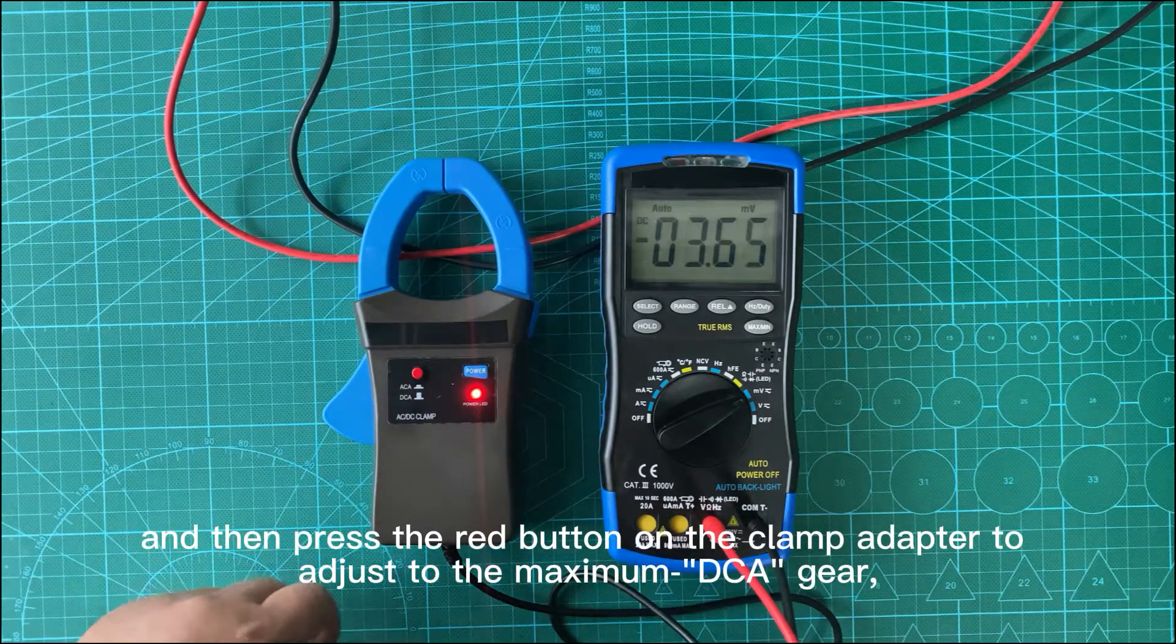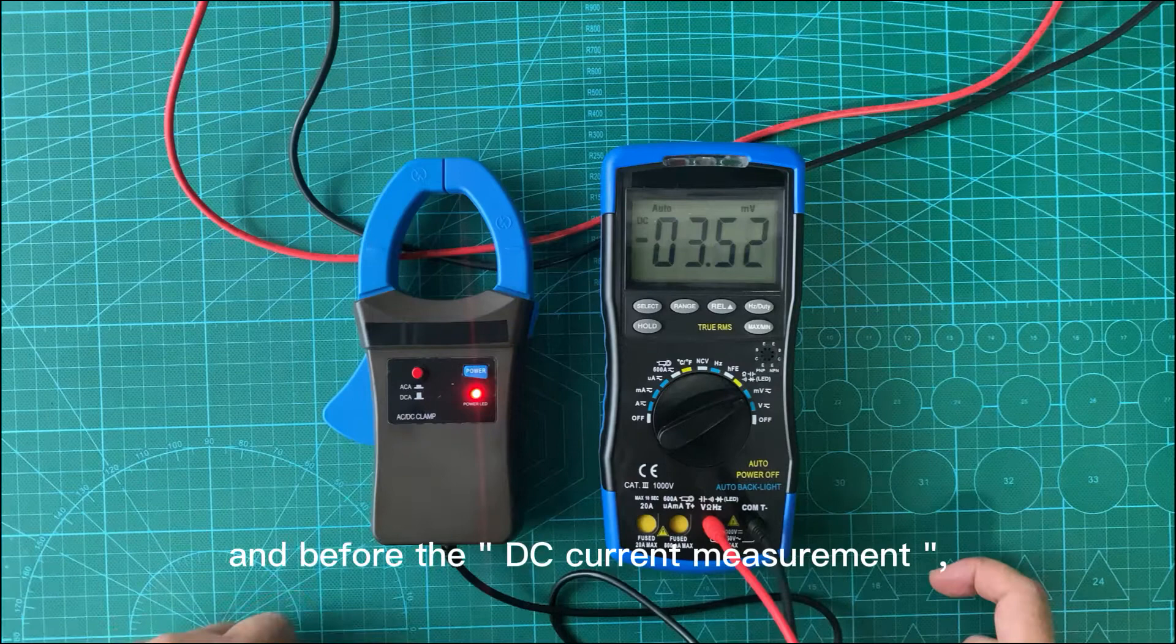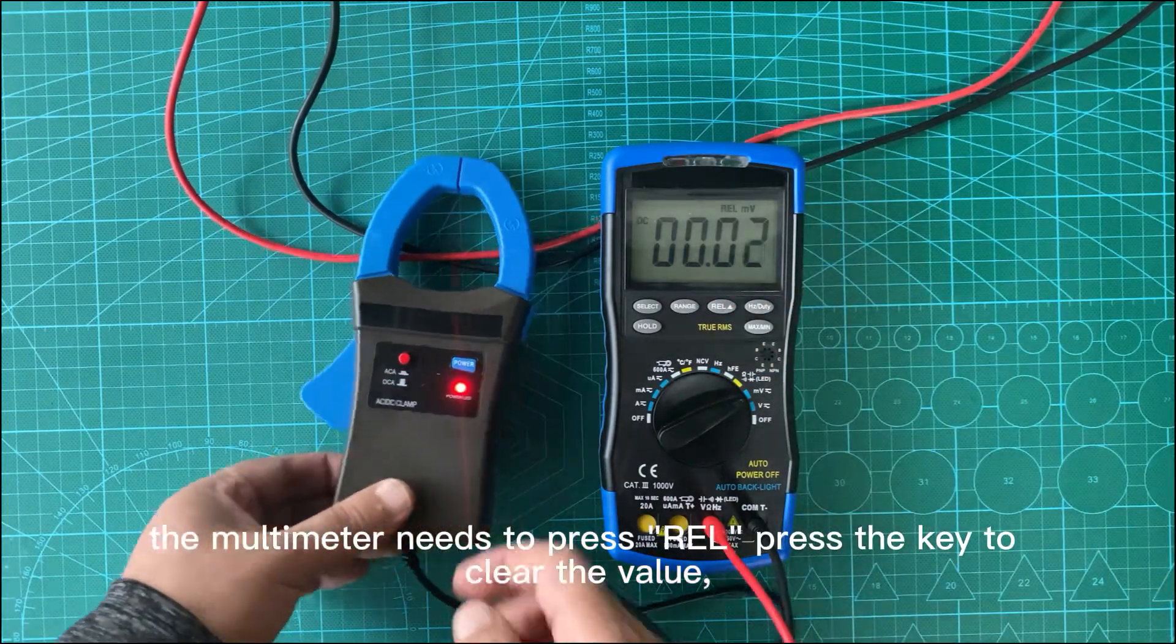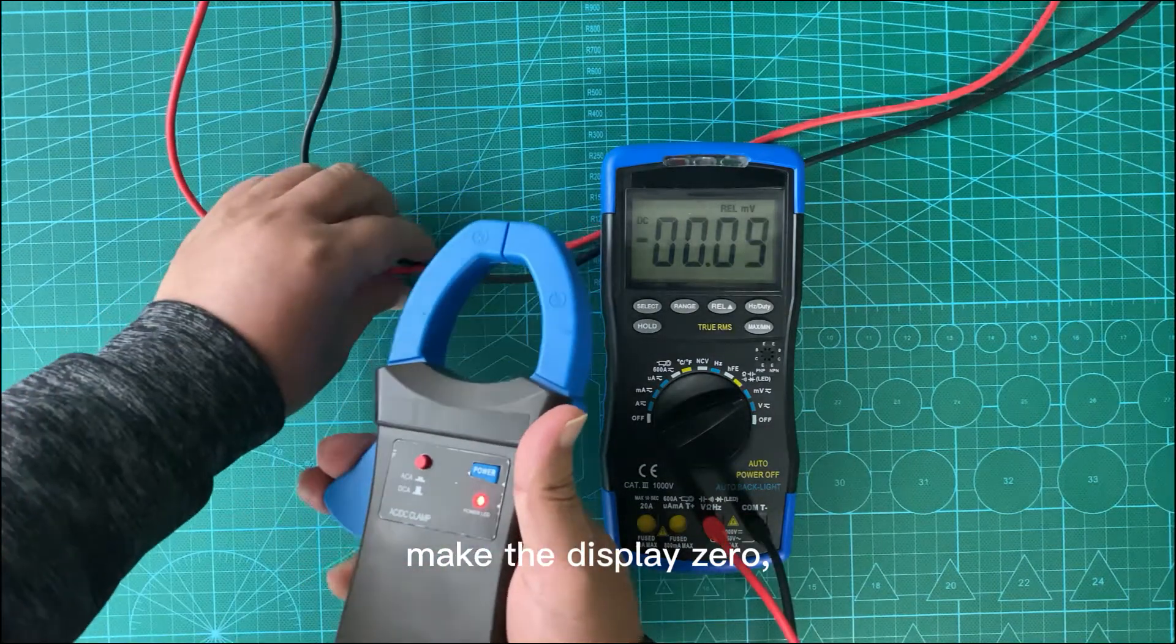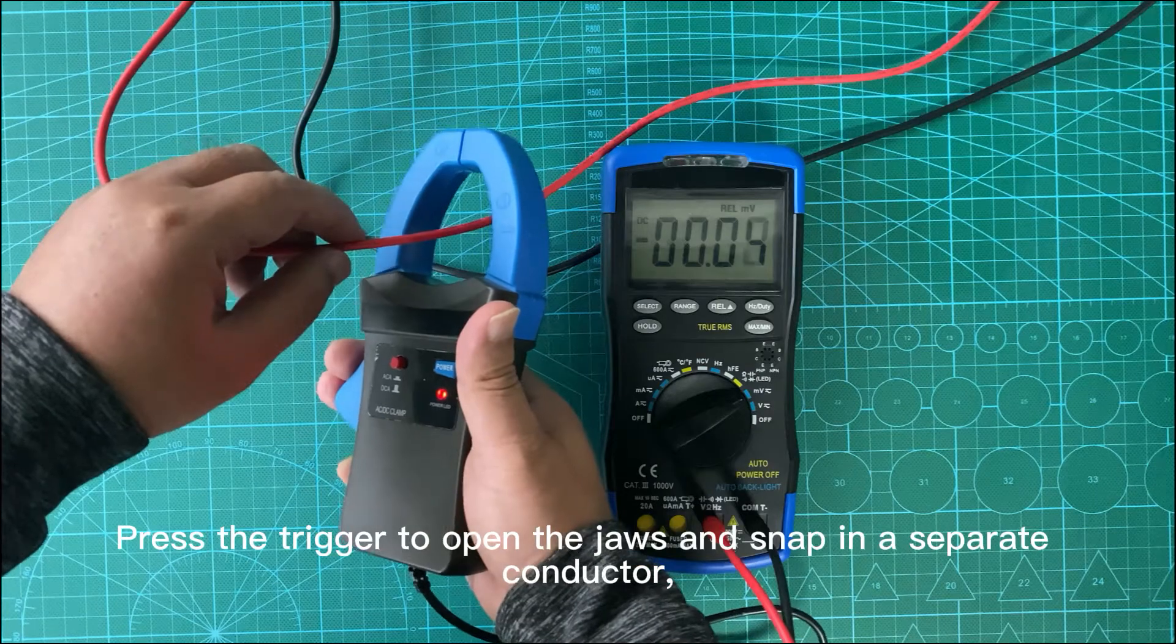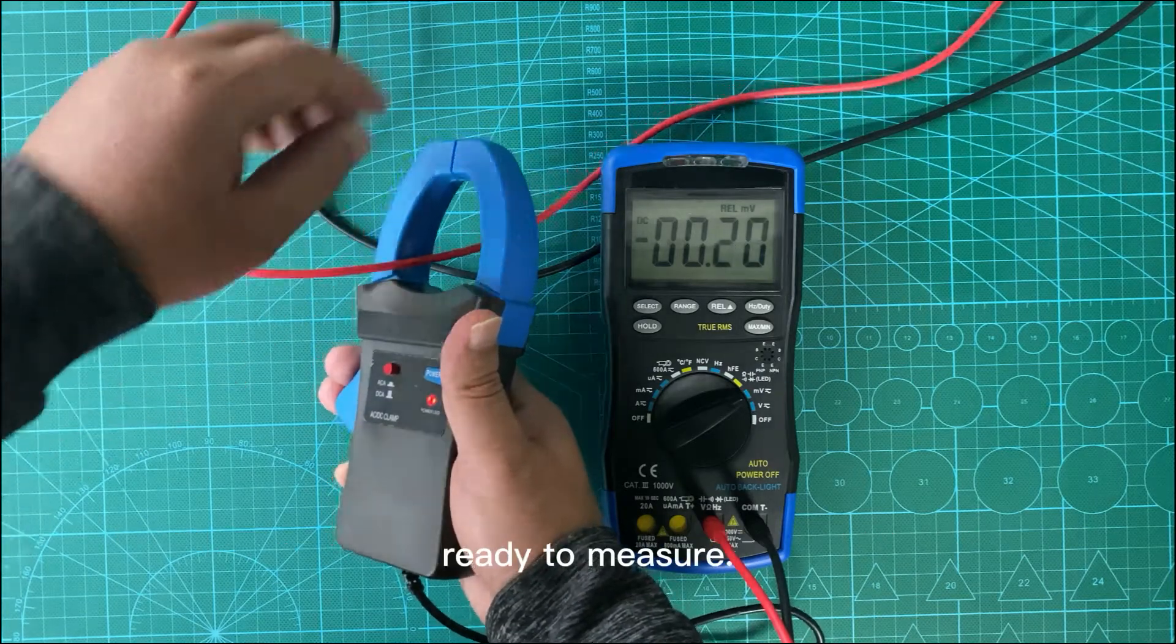Before the DC current measurement, the multimeter needs to press the REL key to clear the value, make the display zero, and then perform the measurement. Press the trigger to open the jaws and snap in a separate conductor ready to measure.